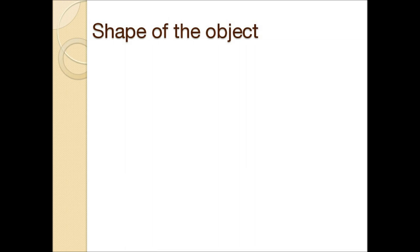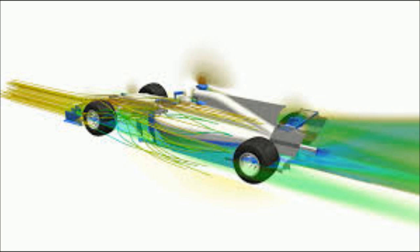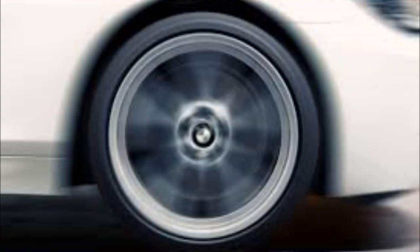Objects having streamlined shapes face much less frictional force or drag when moving through a fluid than objects which do not have streamlined shapes. For example, a car has a streamlined shape like a wedge, due to which it faces much less frictional force of air or air drag while running at high speed. On the other hand, a bus does not have a streamlined shape, so it encounters a much greater frictional force or drag from air while running at the same speed.